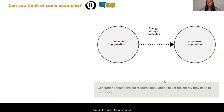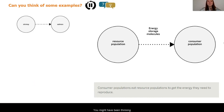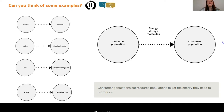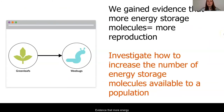Can you think of some other examples of resource and consumer populations? Pause the video and if possible, find a family member or friend to discuss. You might have been thinking about some of the different articles you read, which introduced us to four different types of organisms: salmon eat shrimp to get energy to reproduce, elephant seals eat crabs, emperor penguins eat krill, and firefly larvae eat snails.